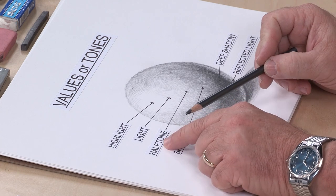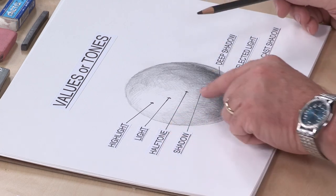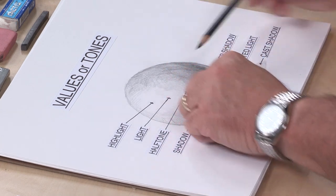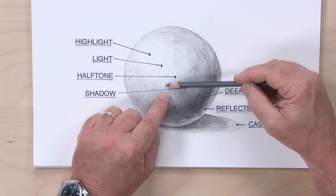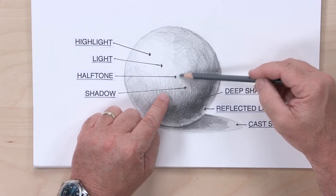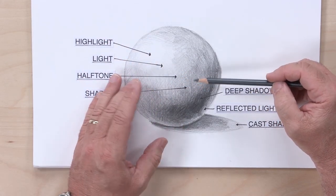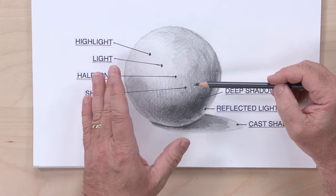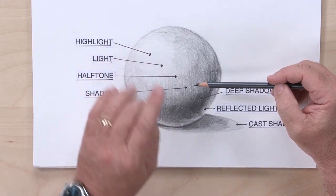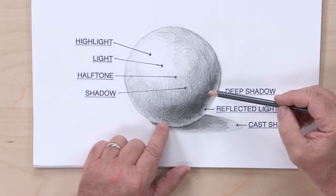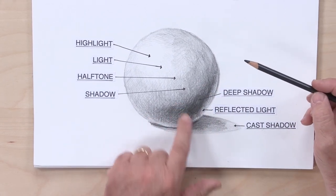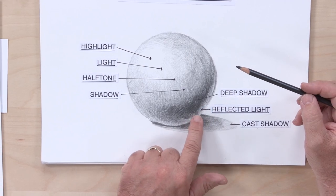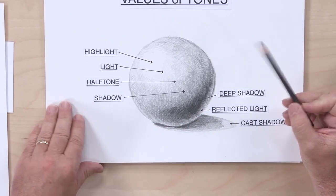I have the word halftone here, and it's important because halftone is kind of exactly what it sounds like — it's that tone right in the middle of everything else. It's important to capture that; sometimes you want to almost lay that in first. And here I have deep shadow, which is a wonderful tone. We also have reflected light and cast shadow, which we'll talk about later.